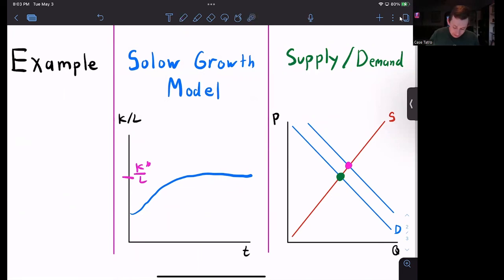Whereas if we look at this Solow growth model, we look at capital per worker, and we see that we start here. And over time, we approach the steady state and we reach it. But this time horizon is very, very long. So we say that this K over L star is a long run steady state.